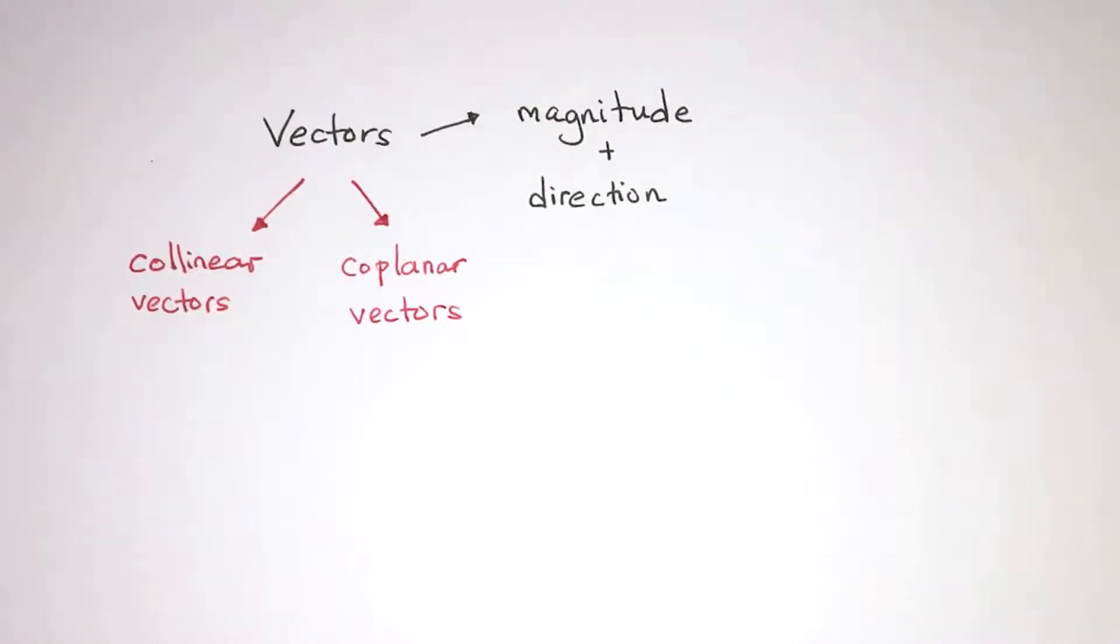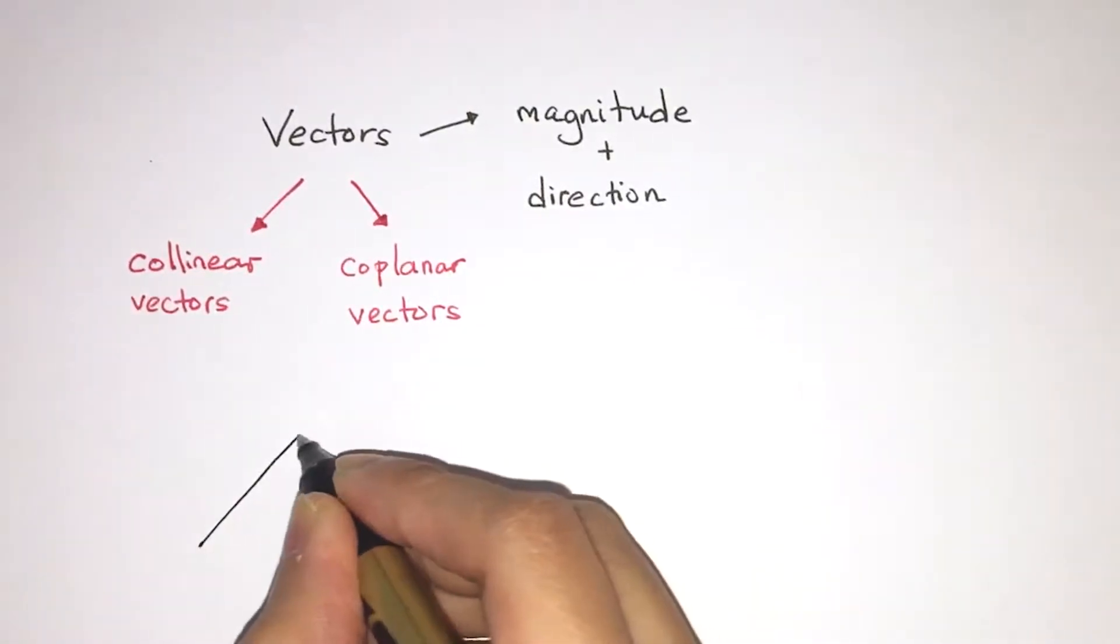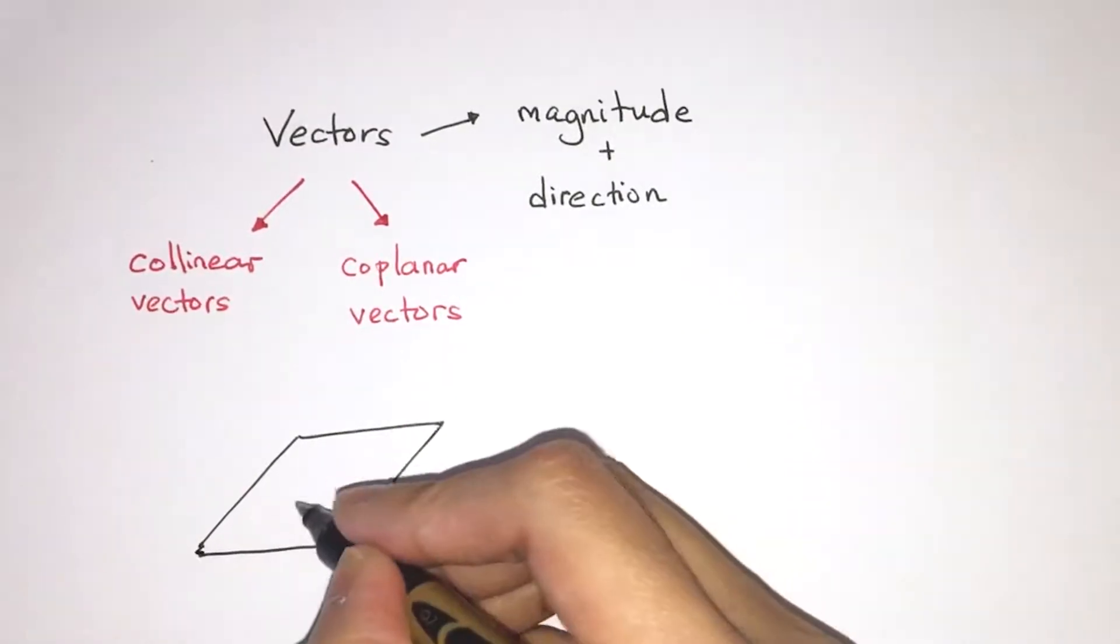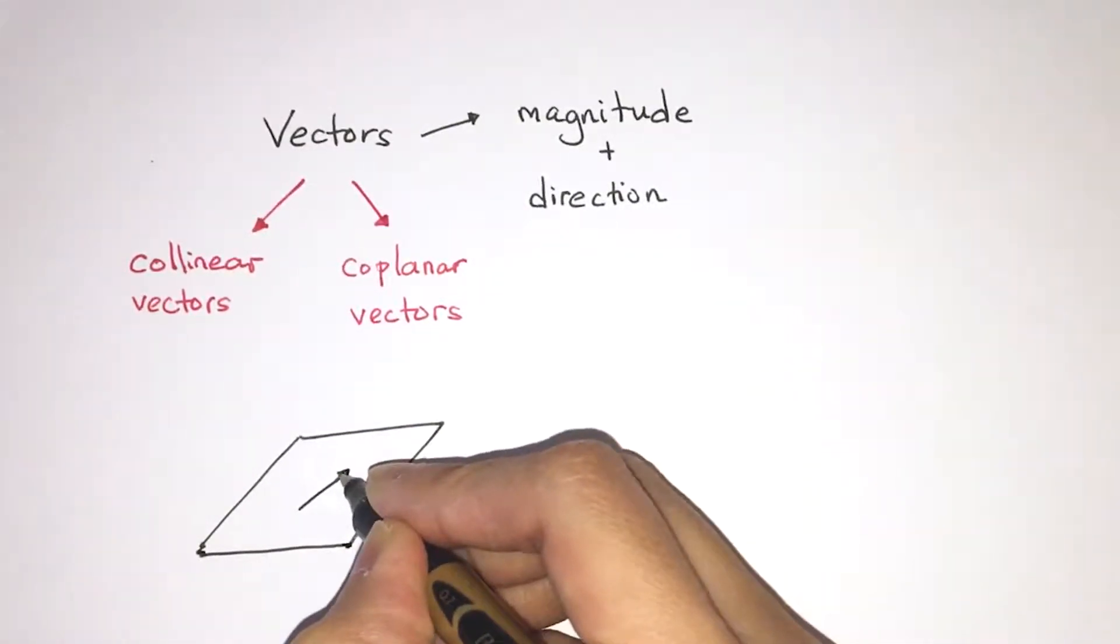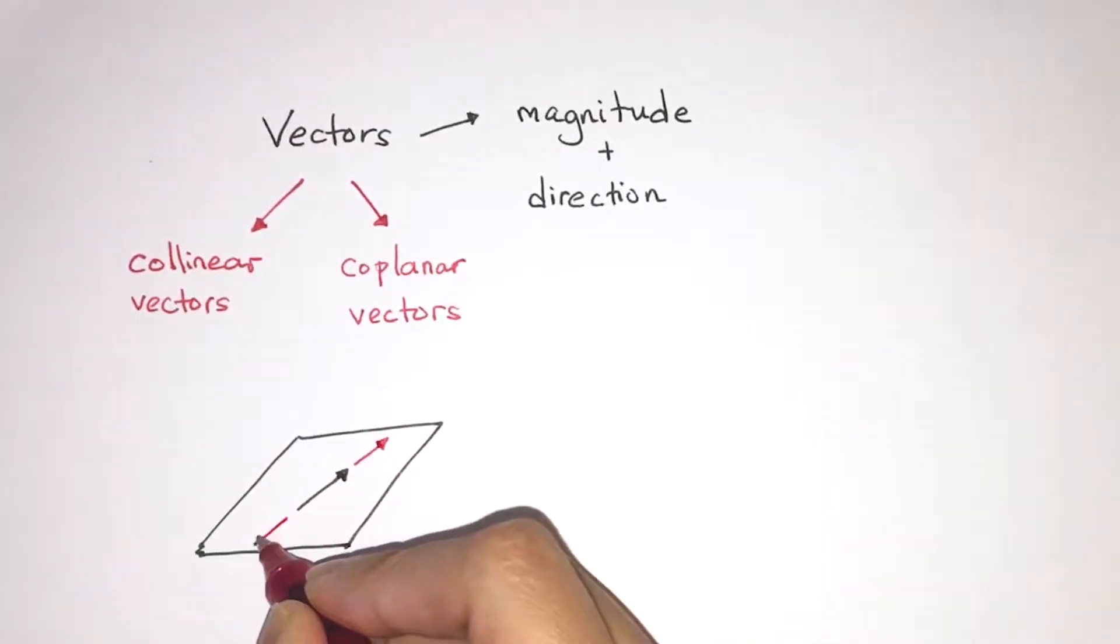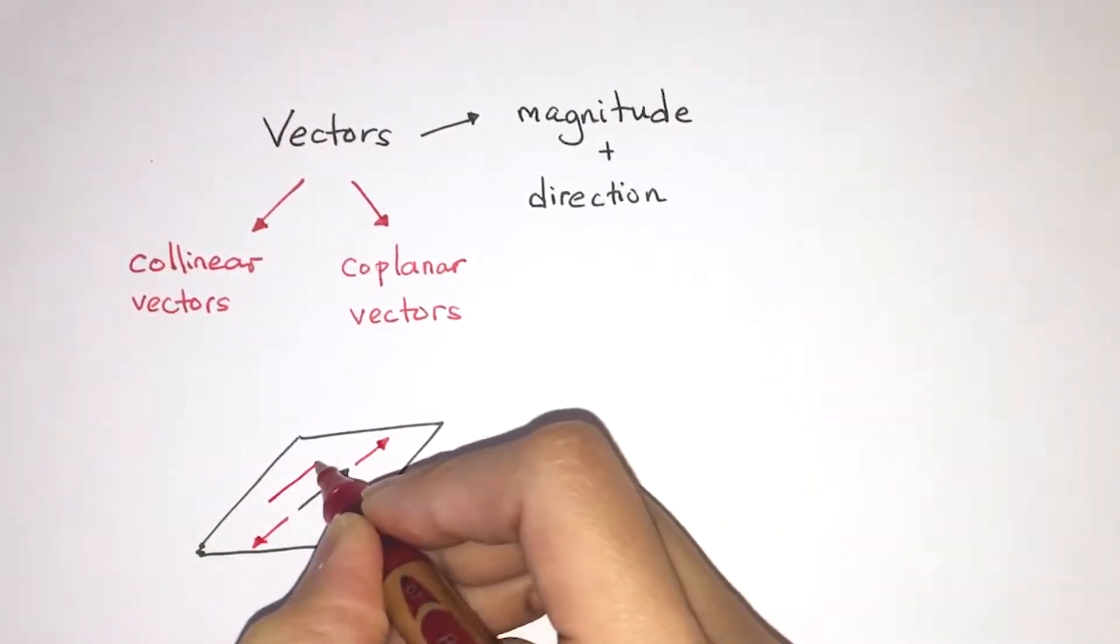So let's look at what makes a group of vectors collinear and what makes them coplanar. To make things look a little bit more three-dimensional, I'm going to draw a plane. And on this plane, I'm going to draw a black arrow.